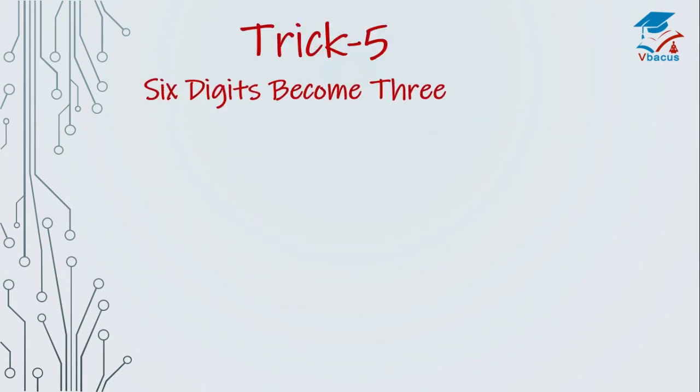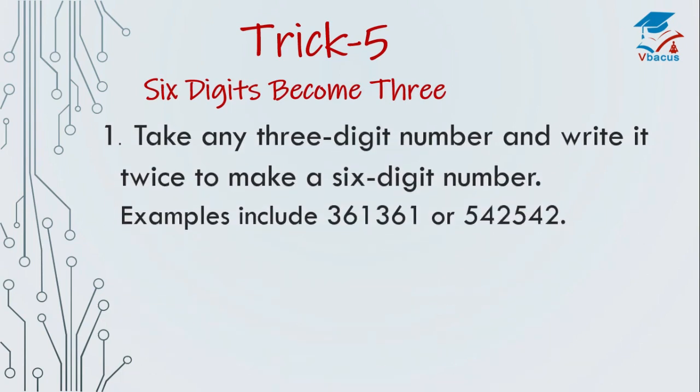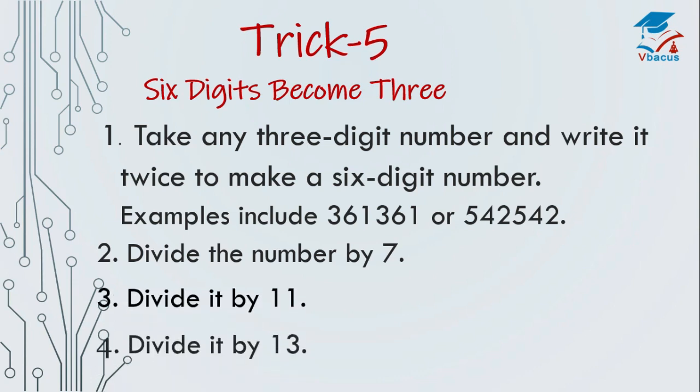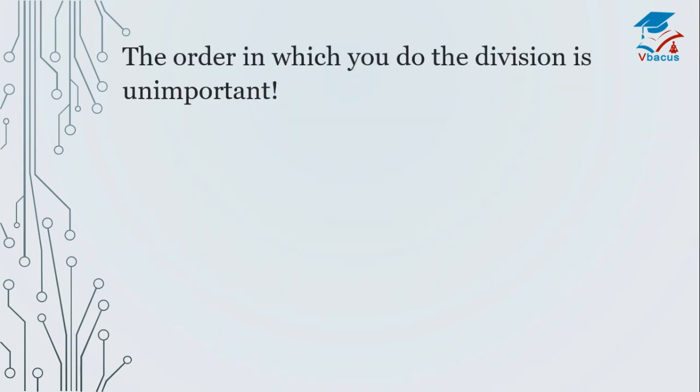Trick 5. 6-digit number become 3. Take any 3-digit number and write it twice to make a 6-digit number. Suppose I take 361, write it twice. It will become 361, 361. Or we can take 542, write twice 542, 542. Now divide the number by 7, divide it by 11 and divide it by 13. So you have to divide same number by 7 and divide the answer by 11 and divide the answer by 13 and your answer will become in 3 digits. The order in which you do division is unimportant. The answer is the 3-digit number.